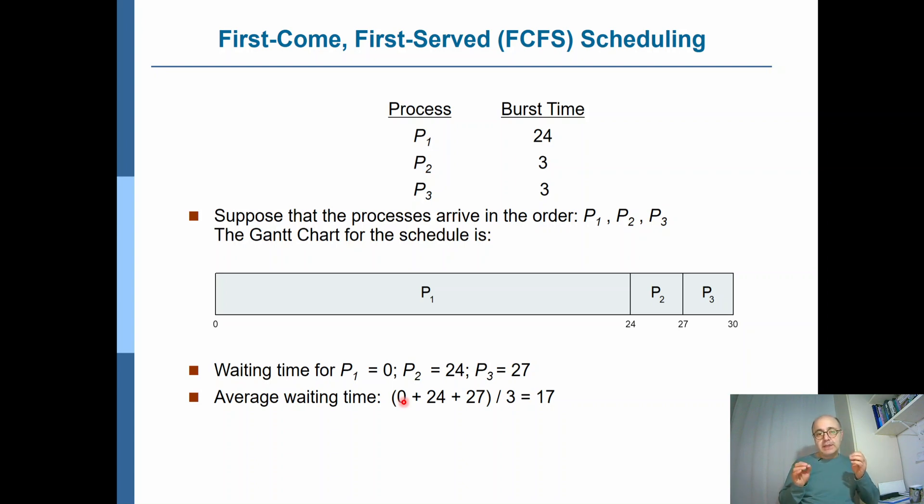Note that the same scenario could have happened with the exception that, remember in the beginning we assumed they arrived almost at the same time, but P1 arrives slightly before P2 and P2 arrives slightly before P3. What if it was the other way around? What if, for example, P2 and P3 arrived slightly before P1? In that case, P2 would be the first one to get into the CPU. So that means this time I would have a Gantt chart like this: First we have P2 executing starting at zero. Remember P2 has an execution time of three, so it would end at three.